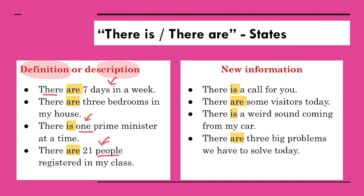There is another way we use 'there is' and 'there are' — when we're trying to explain new information, something that just happened. Hey, there's a call for you. There are some visitors today. There are visitors — somebody new, somebody different. Oh, there's a weird sound coming from my car — it's a new thing. So new information also uses this pattern: 'there is,' 'there are.'